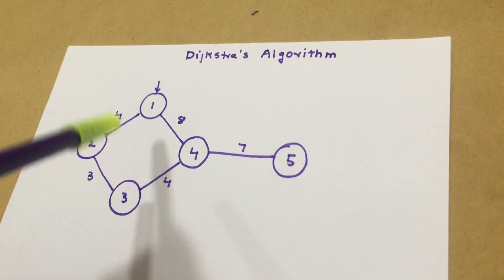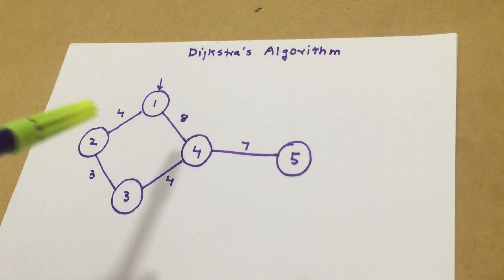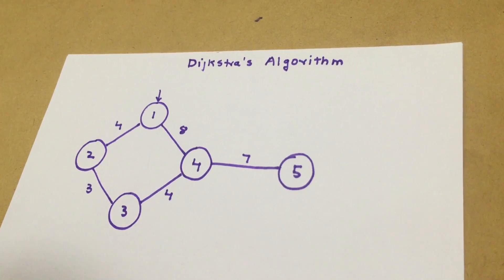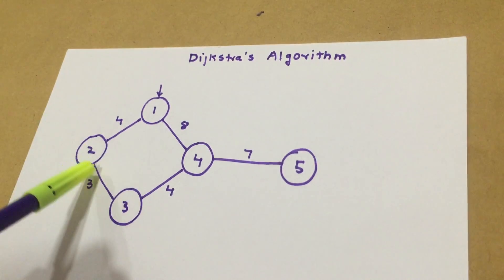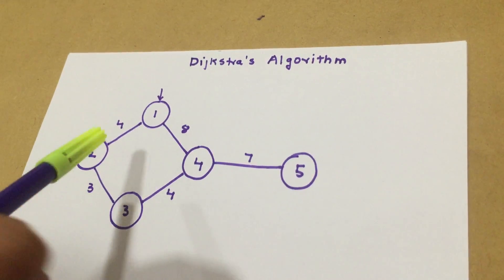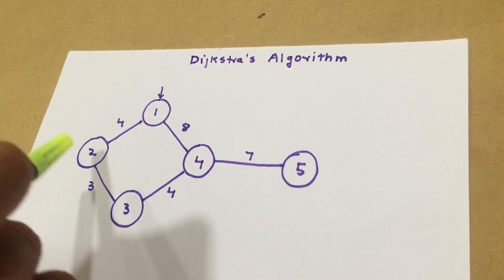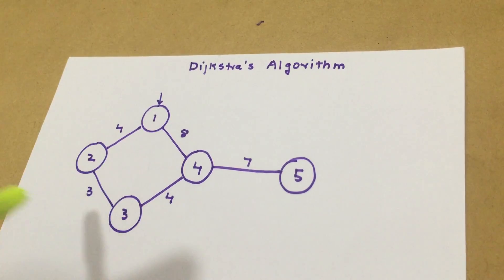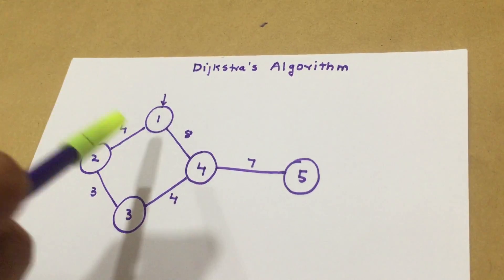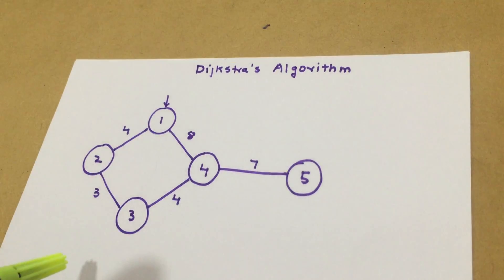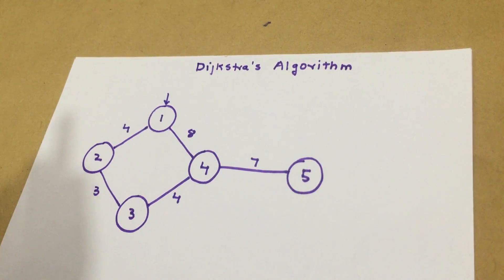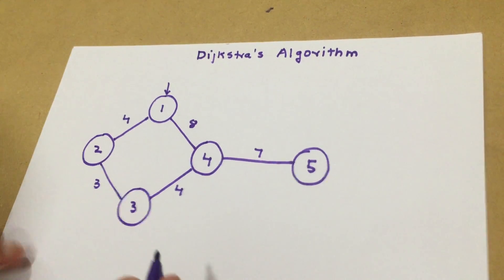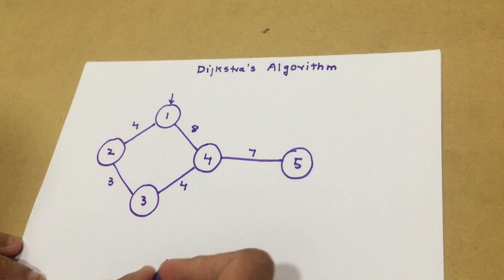So here we have nodes one, two, three, four, and five — these are the nodes in our computer network. What we do in this algorithm is visit an unvisited node and see its shortest distance from the root node. Once we visit a node, to go to the next node we always check the distance from the root node. Now I'm going to explain this with the help of an example.